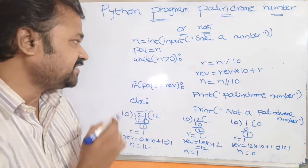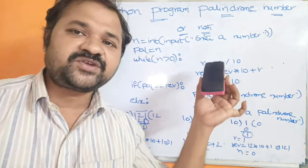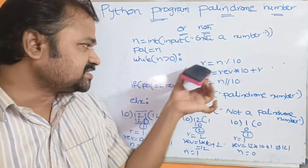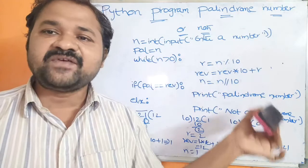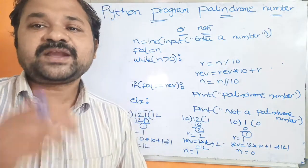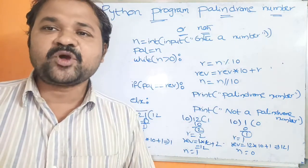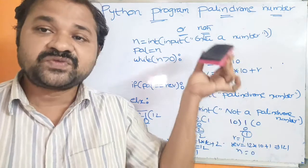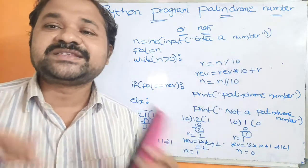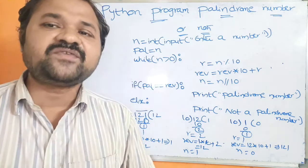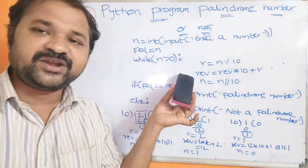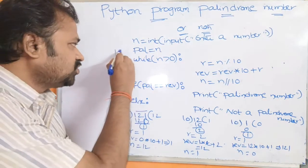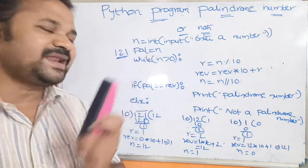Now let us assume the number is 121. So 121 will be available in n. Next, we are storing n in a variable called pal. In the while loop we repeat until n becomes 0, but we still need the original number. Because palindrome means the reverse of your number equals the given number — but n becomes 0 in the while loop. So before entering the while loop, we store n in pal. Now pal contains 121.